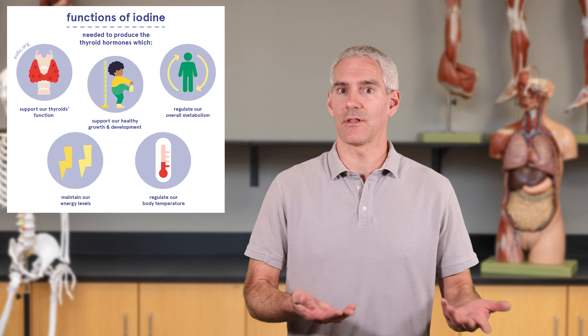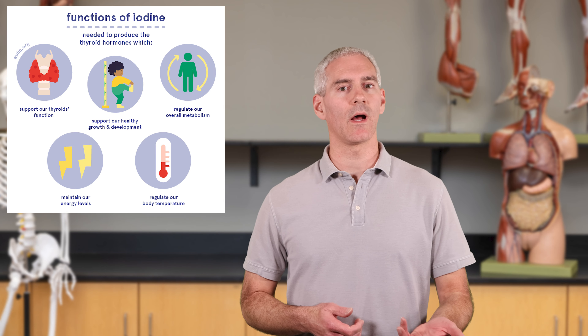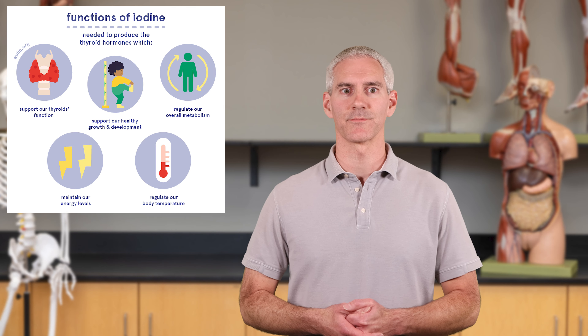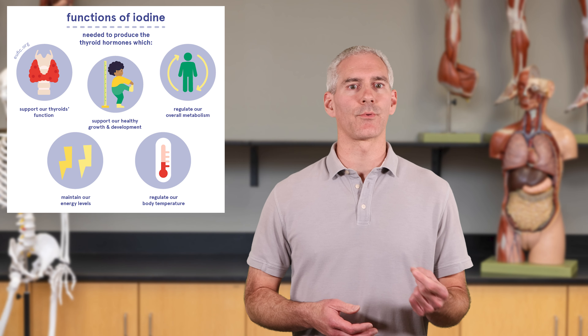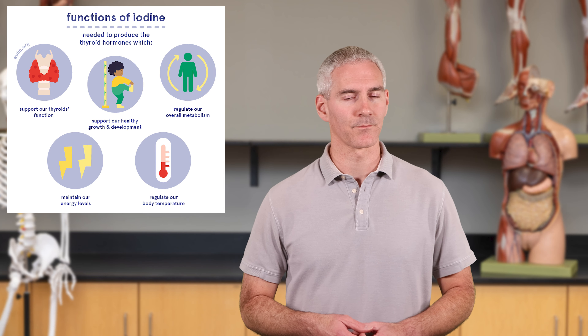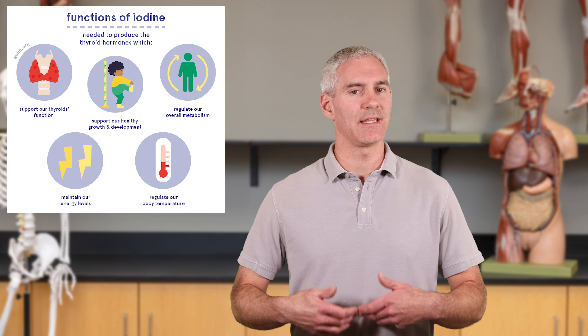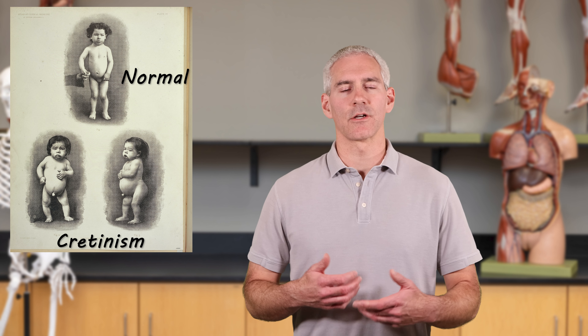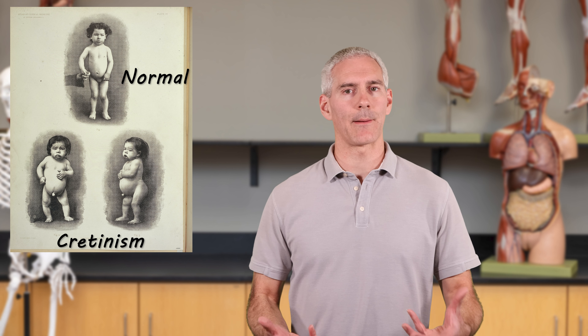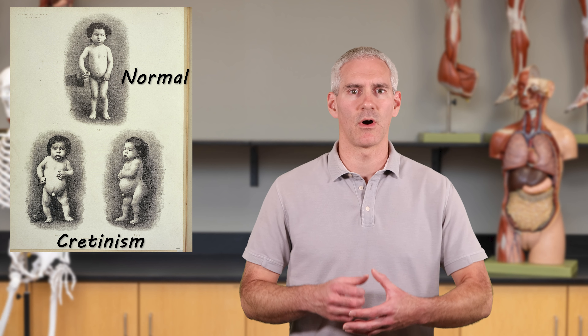Iodine also helps with the regulation of body temperature because metabolism makes energy and therefore heat, as well as your energy levels. It helps with brain growth and body growth overall because metabolism provides the energy needed for all actions to occur. Deficiency in iodine for children, especially infants, is called cretinism — the body can't properly form everything: you don't have proper growth, proper body proportions, the brain doesn't grow properly.